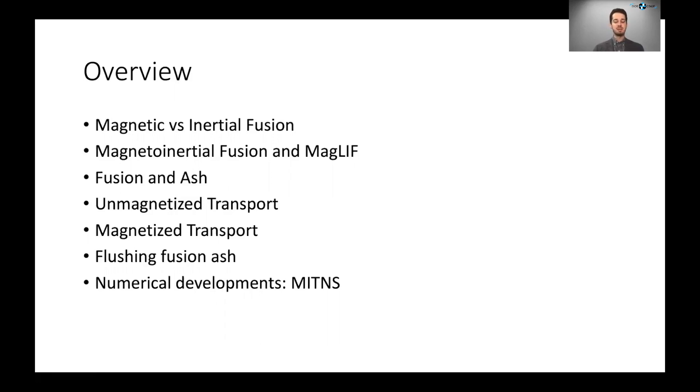I will then talk about how ash, as the fusion reaction proceeds, tends to choke the fusion reaction and why it's important to extract that ash from the fusion core. I'll talk about how unmagnetized transport differs from magnetized transport and specifically how magnetized transport is very qualitatively different and leads to entirely new effects that allow you to flush fusion ash from your reaction core.